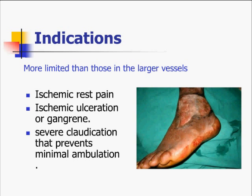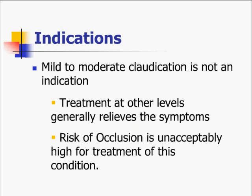The indications for below-knee angioplasty are more limited than those in larger vessels because long-term patency is lower. The indications today are ischemic rest pain, gangrene, non-healing ulcer, or very severe claudication that prevents even minimal ambulation. Mild to moderate claudication is not an indication, as treatment at other levels — such as opening the SFA — usually relieves symptoms, and the risk of occlusion is unacceptably high.